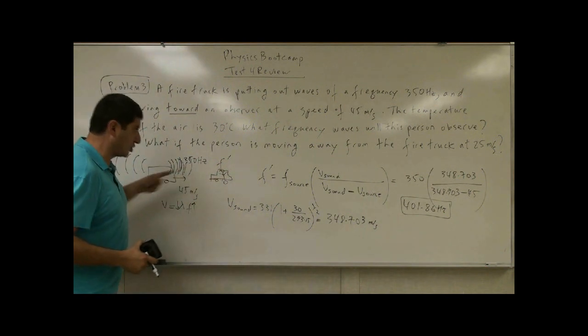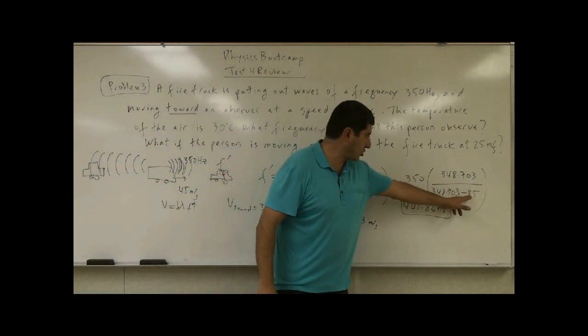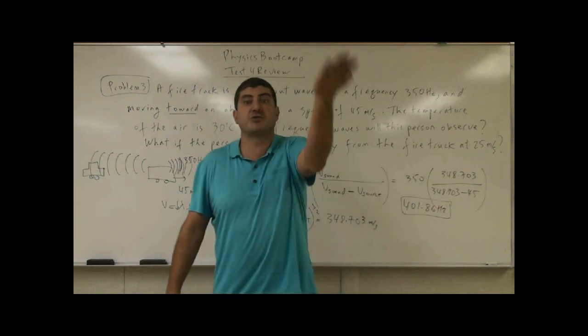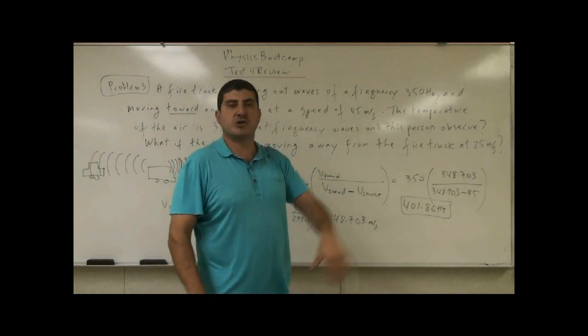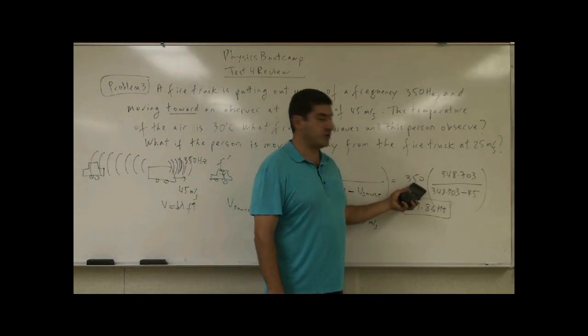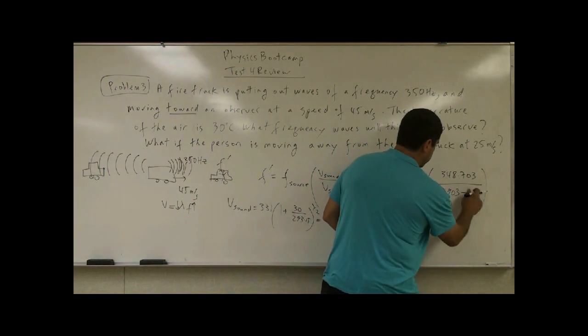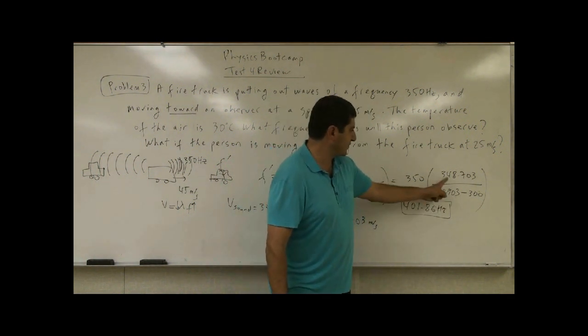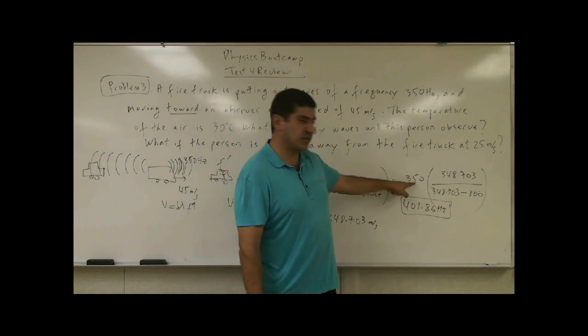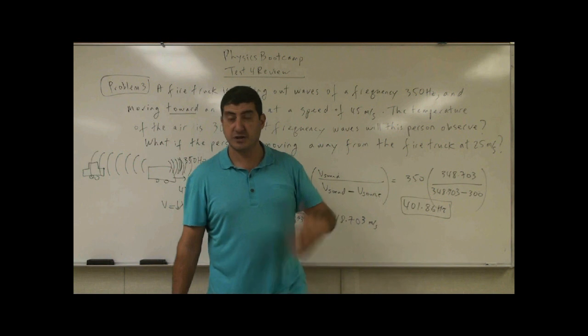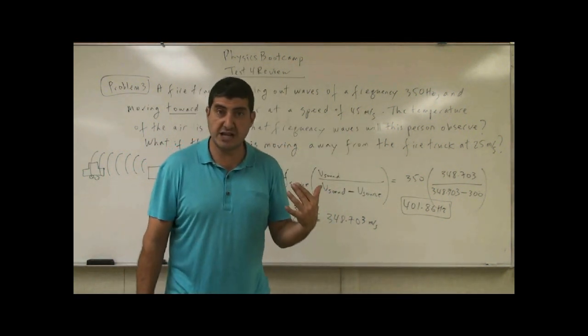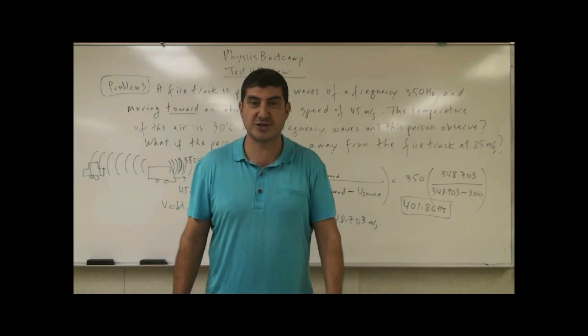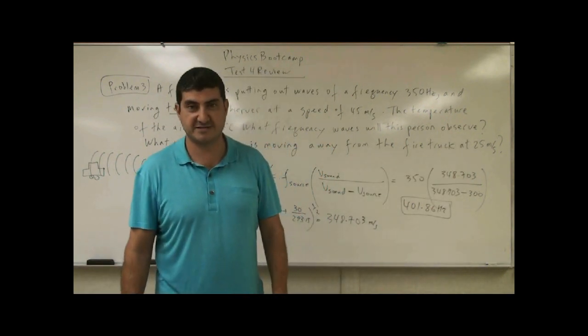Now notice the faster it comes towards you as V source approaches V sound. If it's coming toward you at the speed of, let's say, 100, 200, 300 meters per second, which is very fast, you're going to start hearing a frequency very, very, very loud. Well, eventually there might come a point where the frequency that you hear, because as this approaches 300, what's going to happen? Well, you're going to have 348 minus 300. That's like 50. 350 divided by 50. That's 7. You're going to hear frequency 7 times that, 2,000 hertz. So it's going to be huge. If it's coming to you very, very close to the velocity of sound, you might actually not hear it, because it might actually be ultrasonic, more than 20,000 hertz, and the human ear cannot even hear that. So that's kind of interesting.